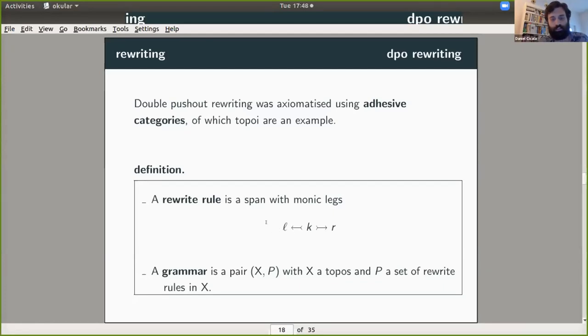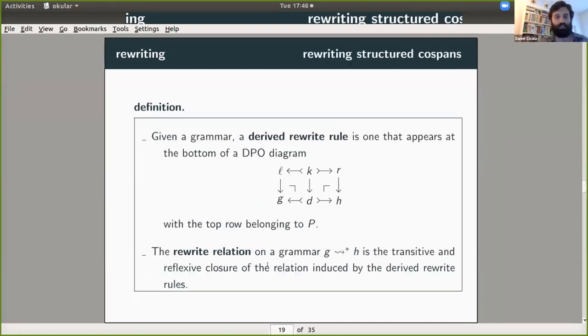And so in general now, a rewrite rule is a span with monic legs. And we'll imagine the span living inside of some topos where we interpret the L as the object that we want to substitute for and the R as the object we want to put in its place. And so then the kind of thing that we would want to study is called a grammar, where a grammar is a pair (X, P), where X we're going to think of as a topos whose objects are some sort of closed system types. And P is a set of rewrite rules, the kind of substitutions we want to be able to make.